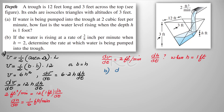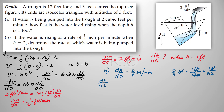Now for part B, dh/dt is given — the rate at which the water is rising — as 3/8 of an inch per minute. Converting to feet: 3/8 inch times 1 foot per 12 inches. The inches cancel, and 3 divided by 12 gives 1/4, so 8 times 4 is 32. Therefore, 3/8 of an inch equals 1/32 of a foot, and dh/dt is 1/32 foot per minute.